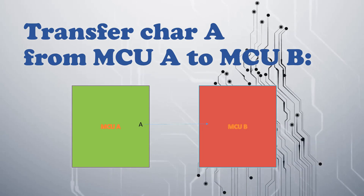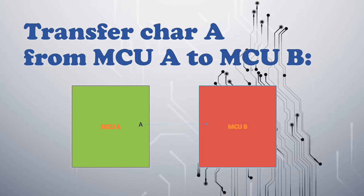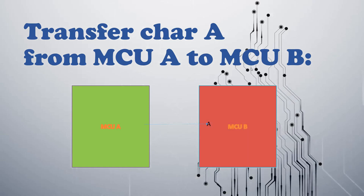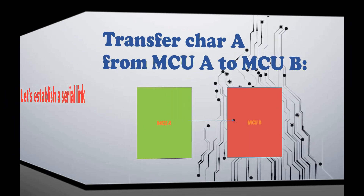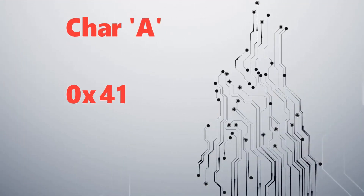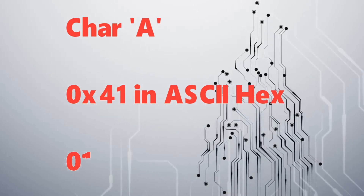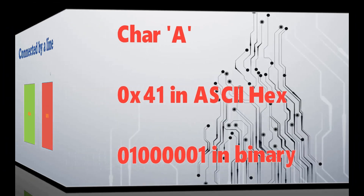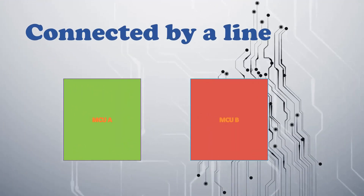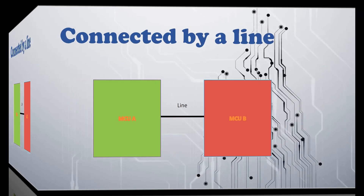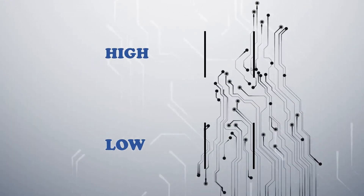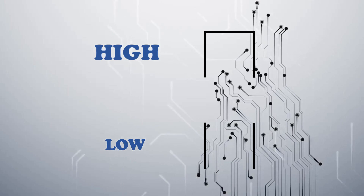Let us take character A to be transferred from microcontroller A to microcontroller B serially over a single line. Character A has the ASCII value 0x41, which is the binary representation of character A. Microcontroller A and microcontroller B need a single line connection for serial transfer. Both microcontrollers understand high as 1 and low as 0.